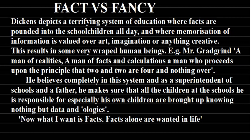Dickens describes Mr. Gradgrind with these words: 'Mr. Gradgrind was a man of realities, a man of facts and calculations, a man who proceeds upon the principle that two and two are four and nothing over.' This was the basic principle of that man — he was a man of facts, realities, and calculations, nothing more. He completely believes in this system, and as a superintendent of a school and a father, he makes sure that all children are brought up knowing nothing but data and ologies.